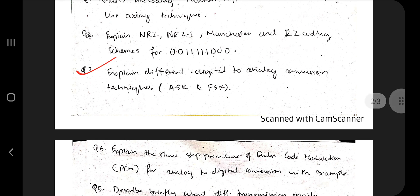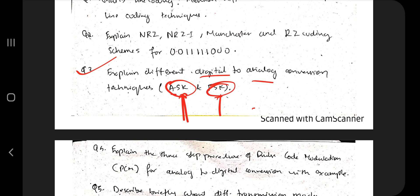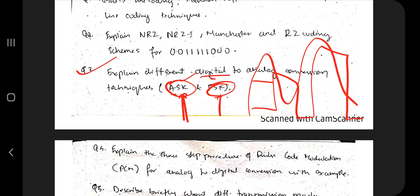Moving on, the next super important question covers ASK and FSK. This is a separate topic I have discussed in the theory video. Basically you have to explain digital-to-analog conversion — digital is discrete, and if you have to convert to analog you use ASK and FSK. You need to explain the different contexts which use each, their advantages and disadvantages, cost and time factors, purpose, and the different parameters affecting them. The formulas used and why those parameters are present are also key concepts.